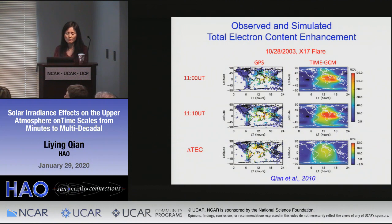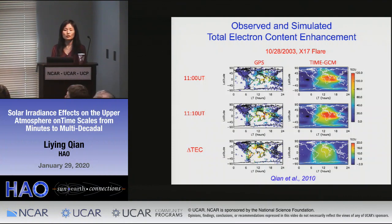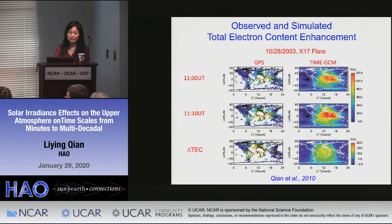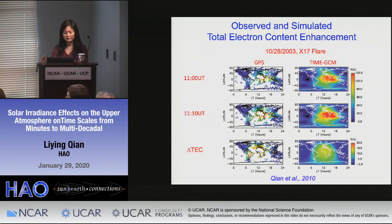Let's look at the total electron content from model simulation due to a very large solar flare — the X17 flare during the famous Halloween storms in 2003. Total electron content is the total electrons in a vertical column in the ionosphere. On the left is GPS measurement; on the right is the TIME-GCM model simulation. The top row shows TEC right before the flare, the middle row shows TEC at the X-ray peak, and the bottom row shows the difference — the enhancement due to this flare. During this flare, the TEC enhancement is about 15 to 25 TEC units, which is about 15 to 30 percent of the TEC.